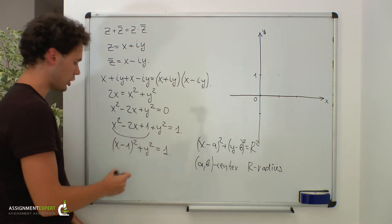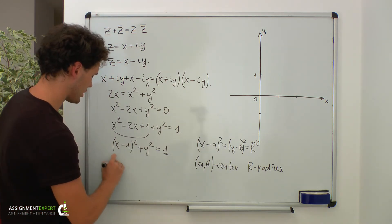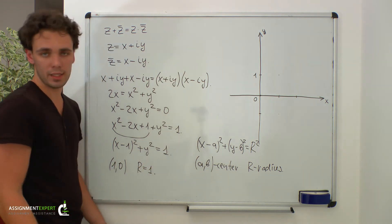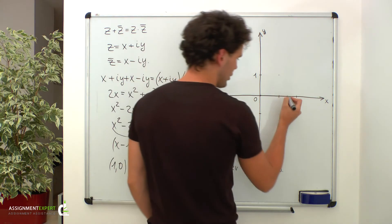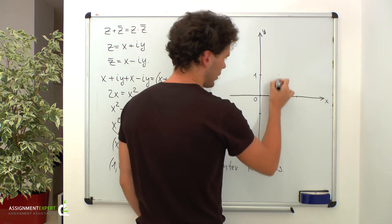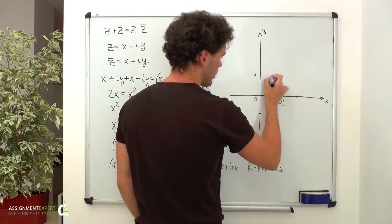So we obtain the circle with the center at 1, 0 and with a radius equal to 1. Let's graph it. Our center is over here, it is 1, 0, and we have a unit radius. So this is our circle.